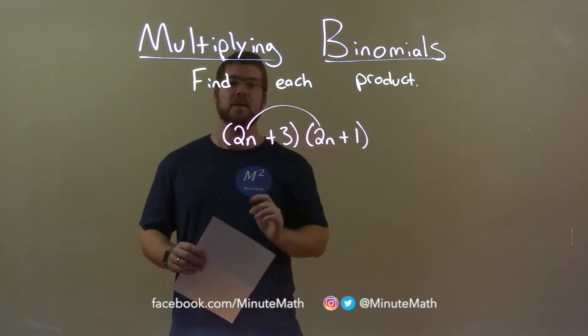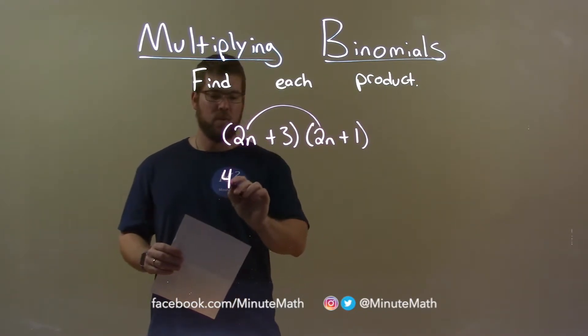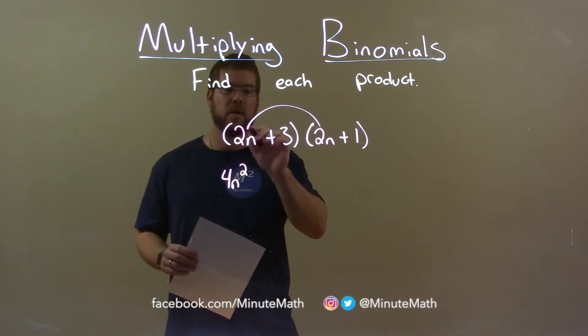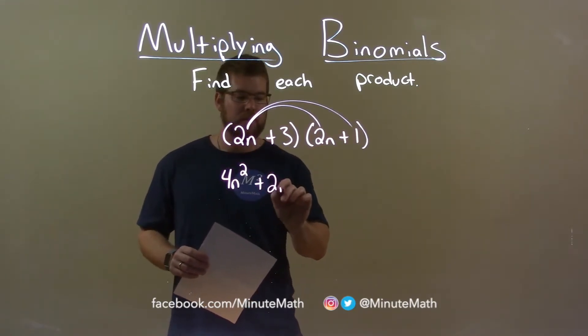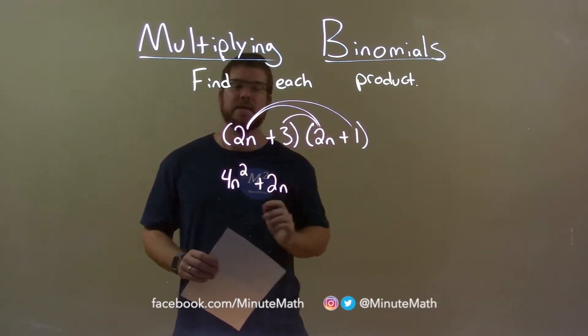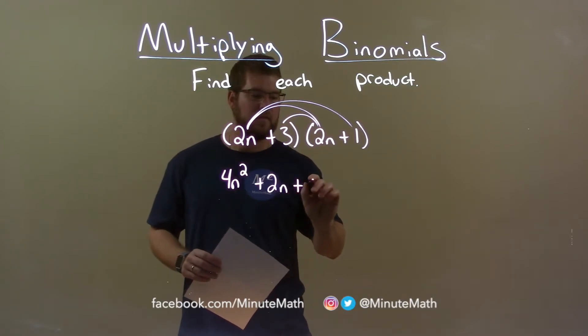So 2n times 2n becomes 4n squared. 2n times 1 is 2n, 3 times 2n is 6n.